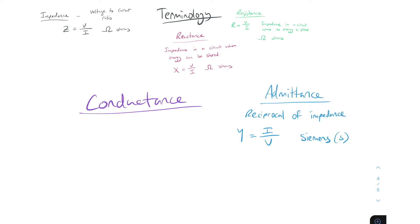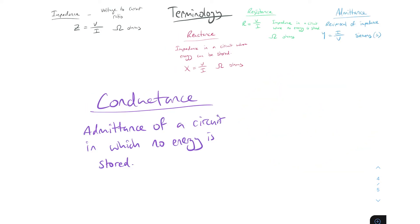Conductance is denoted with G, and the formula for it is I over V, the same as admittance. Likewise it's measured in siemens and we use S for siemens.